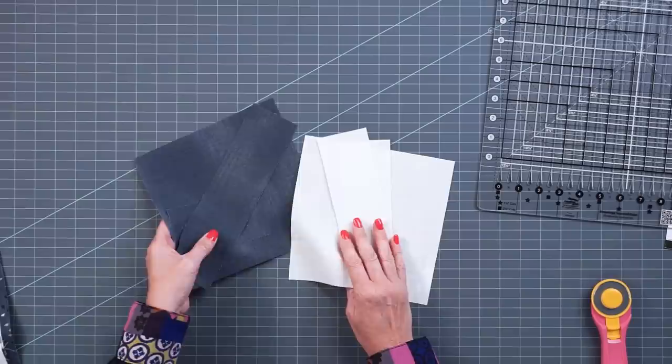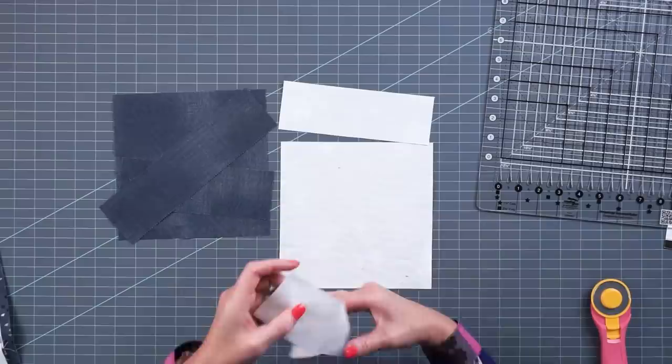So we start by cutting our 10 inch square into a large square, a small rectangle, and a larger rectangle.